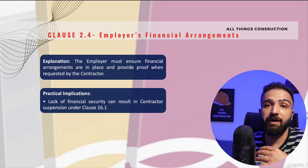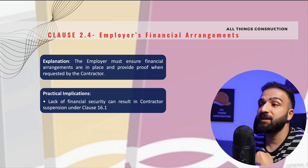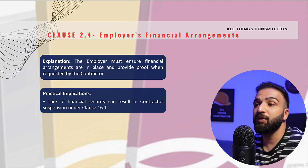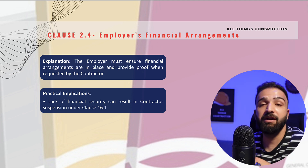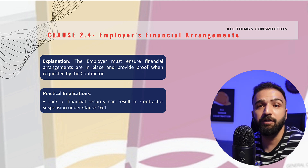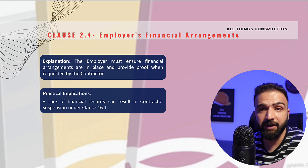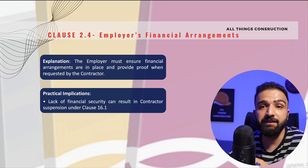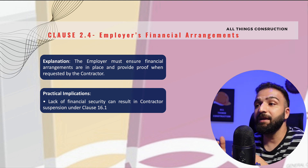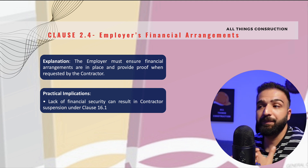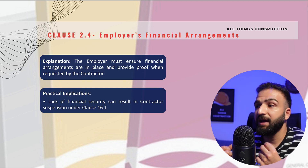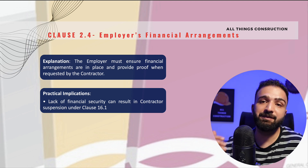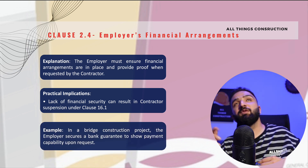The practical implication of this clause is that if the employer fails to provide this financial evidence upon request, the contractor is allowed to suspend work under Clause 16.1 of the contract until sufficient evidence is provided. This clause protects the contractor from financial uncertainty and ensures that the cash flow of the project is maintained.